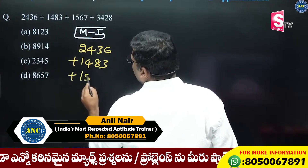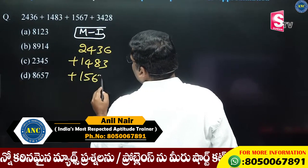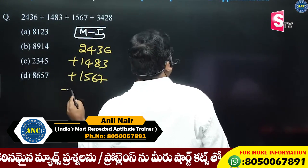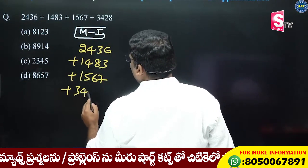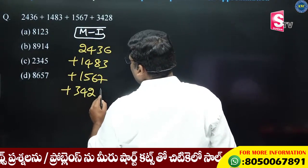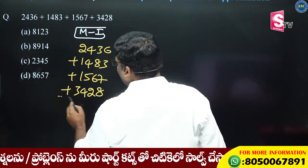The first step is to calculate 1567 plus 3428. If you calculate, you will get the best answer.